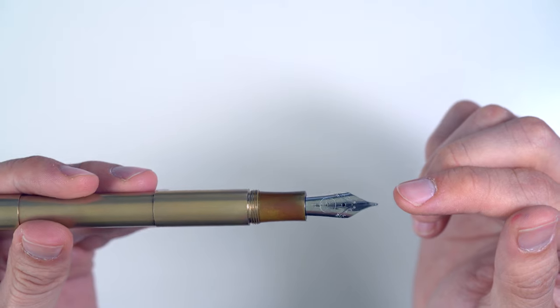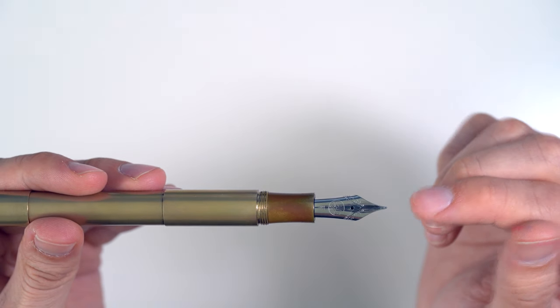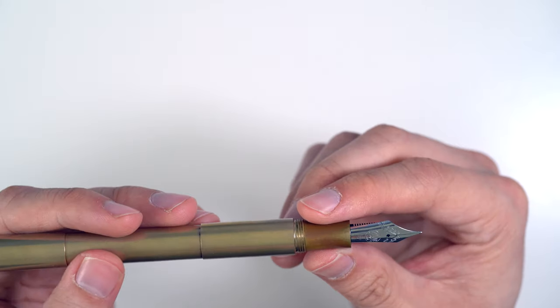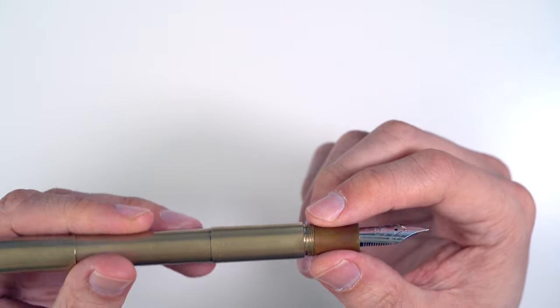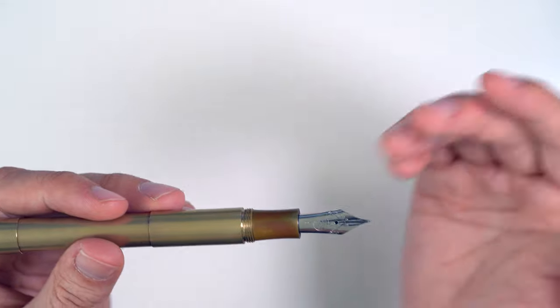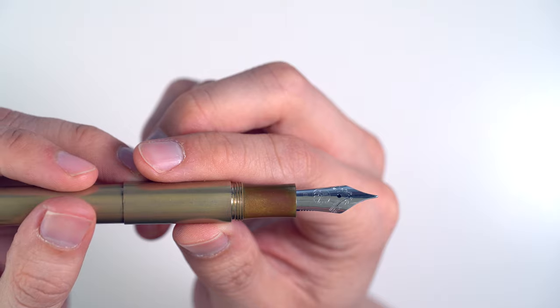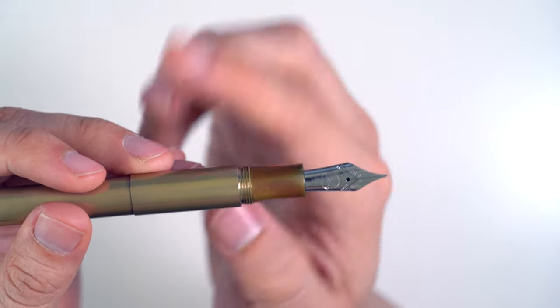You get a big Bach No. 6 nib. It is a threaded nib unit, so you can change this out with other Bach No. 6 nib units. That's always nice. You can buy gold nibs for this pen from Kaweco, or you could use ones from another brand as long as it's threaded for Bach.